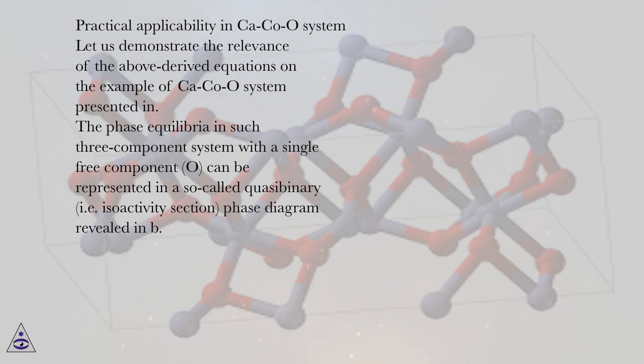Practical applicability in Ca-Co-O system. Let us demonstrate the relevance of the above-derived equations on the example of the Ca-Co-O system. The phase equilibria in such a three-component system with a single free component O can be represented in a so-called quasi-binary, i.e., isoactivity section phase diagram revealed in B.